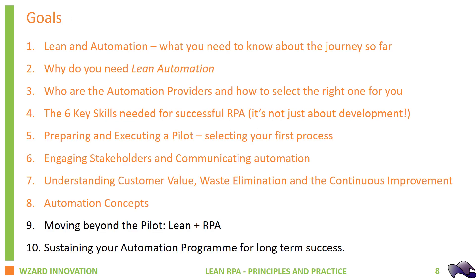Let's pause for just a second and review our goals for the course so far. We've looked at lean and automation, understood why you need lean and automation, who the main automation providers are, and we've seen in this chapter more detail about how to select the right one for you. We've also seen the six skills needed for RPA success and preparing and executing a pilot.